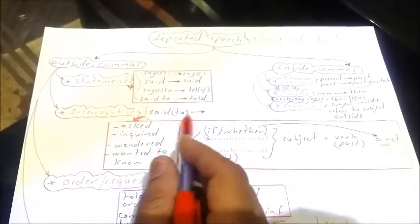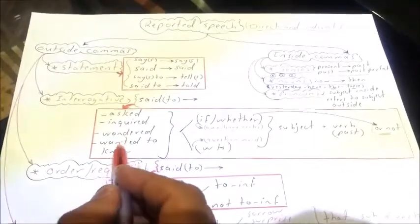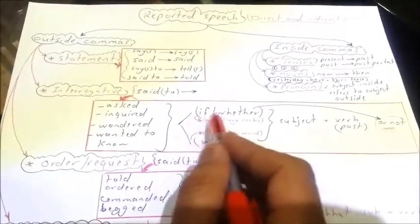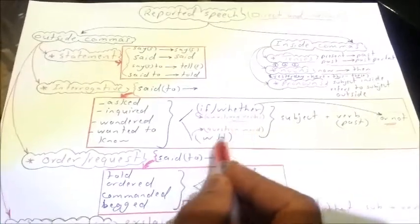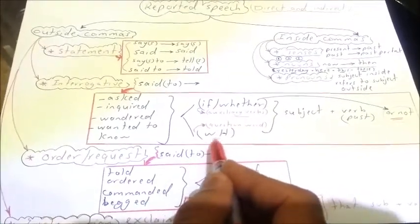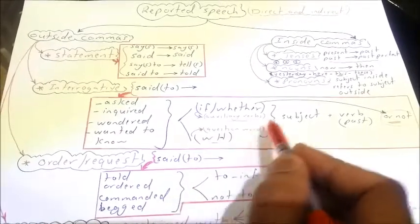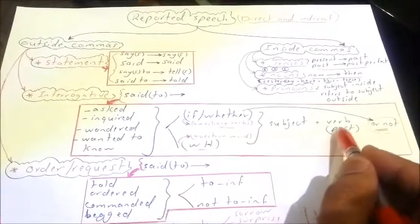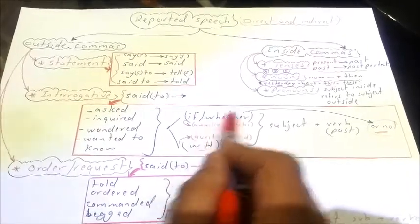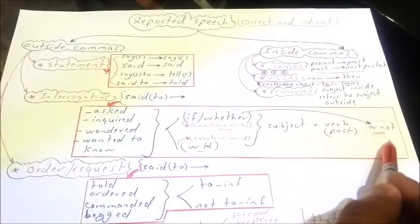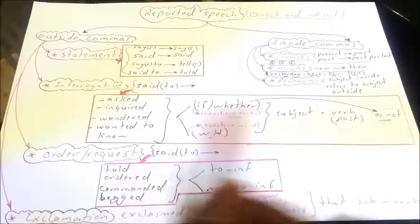For interrogative sentences, 'said' or 'say to' becomes 'asked', 'inquired', 'wondered', or 'wanted to know'. These are followed by 'if' or 'whether' if the question started with an auxiliary verb, and followed by a wh-question word if there is a question word. Then we have the subject and verb. If we have 'whether', in most cases at the end of the sentence we add 'or not'.